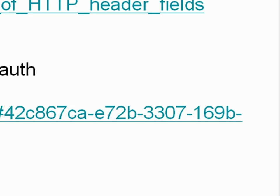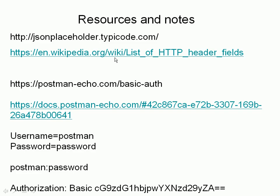Here are a few useful resources — I'll put them in the video description as well. To recap: the username is 'postman', password is 'password'. We combine them with a colon and base64-encode the result to get the encoded string. It looks encrypted but it's not — base64 is not an encryption mechanism, it's just a way of encoding data so it can be sent over a text link.